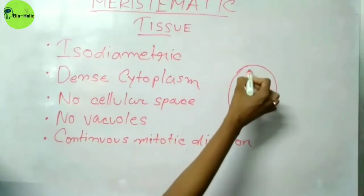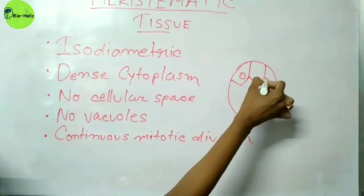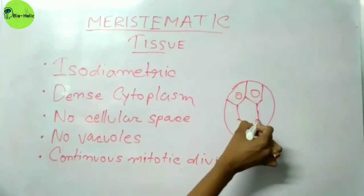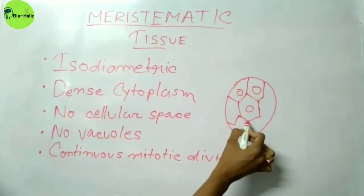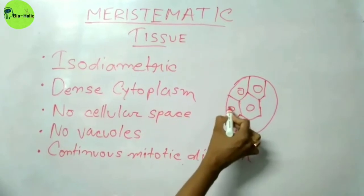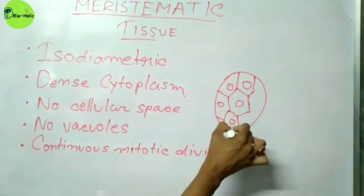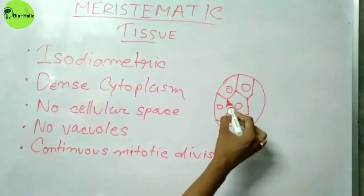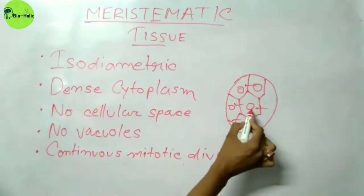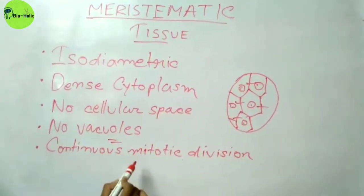The meristematic cells continue mitotic division until they are dead. Looking at the diagram of the meristematic tissue, you can clearly see that they are isodiametric in size. They have no intercellular spaces between the cells, and there is only the presence of the nucleus. There are no vacuoles in them.